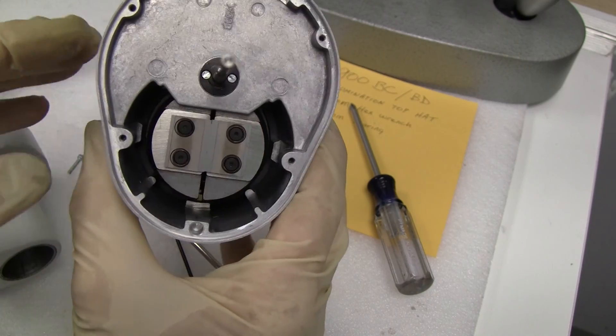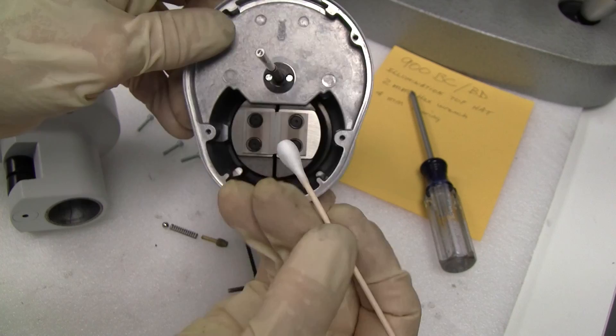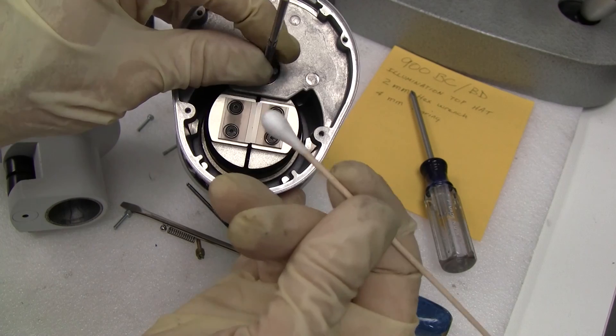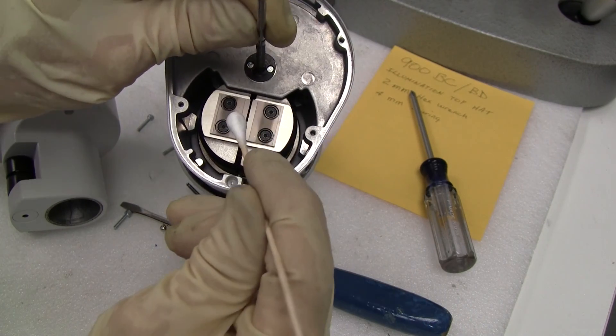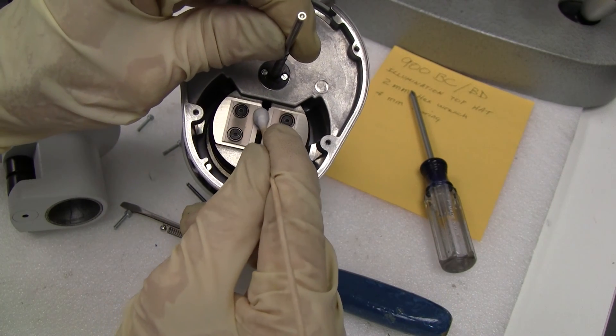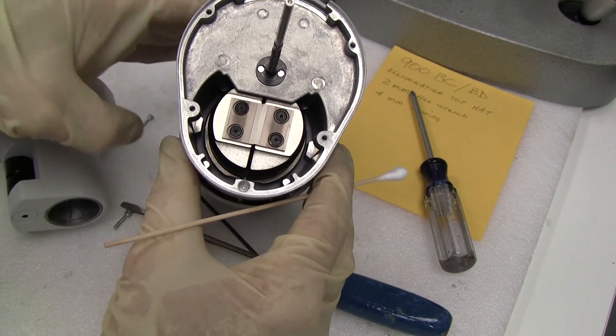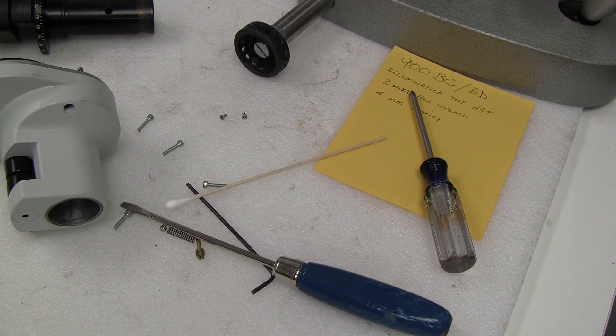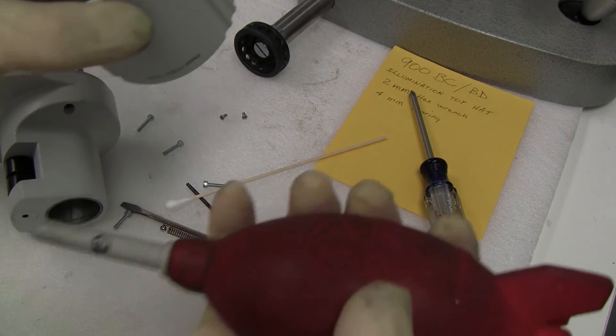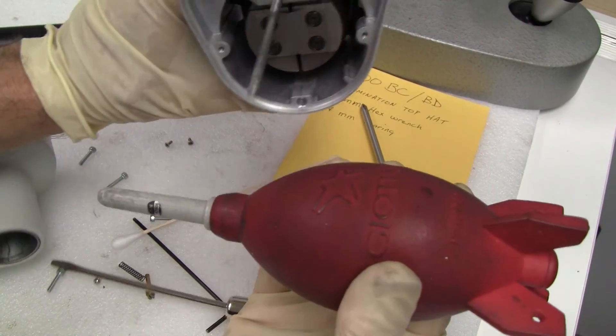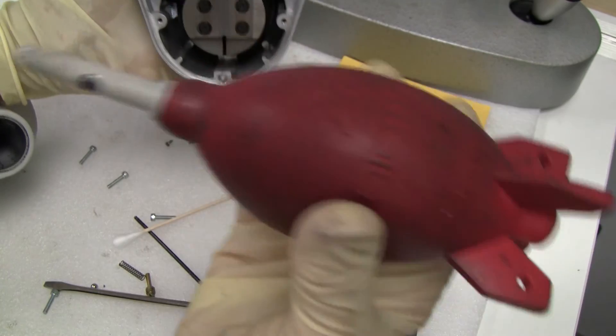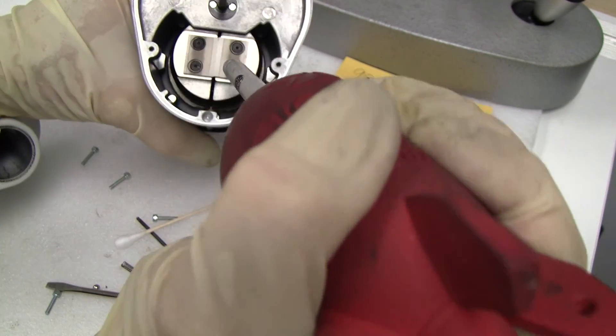If you need to clean the slits, you can get a cotton swab with some acetone and clean the slits. And be sure to blow it out with your hurricane blower.